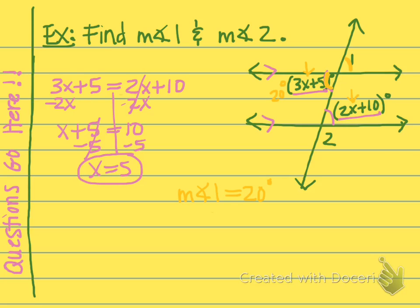For the second angle, 2x + 10 with x = 5 gives 2(5) + 10 = 20 degrees, which makes sense because it must be congruent to the other alternate interior angle. However, angle 2 is right next to it and those two are supplementary, so we subtract 20 from 180 to get 160. The measure of angle 2 equals 160 degrees.